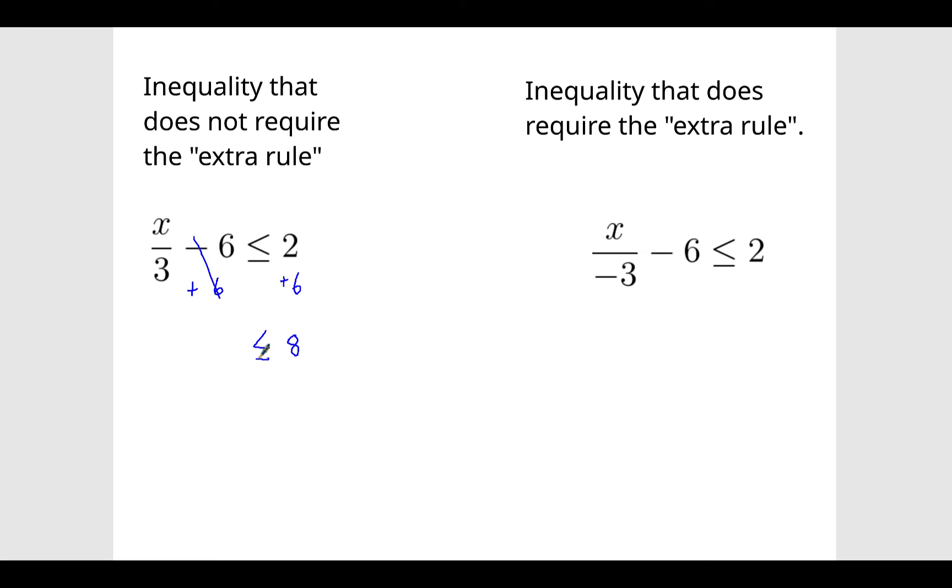So we end up here with x divided by 3 is less than or equal to 8. So in order to undo this division that's happening to x, we have to multiply by 3. Multiply this by 3. What we do to one side, we do to the other. These cancel out or become 1, and you have x is less than or equal to 8 times 3, which is 24.